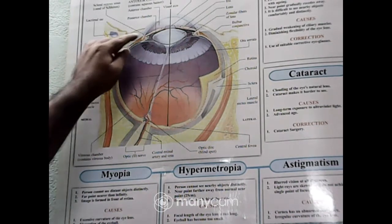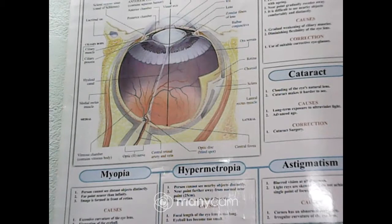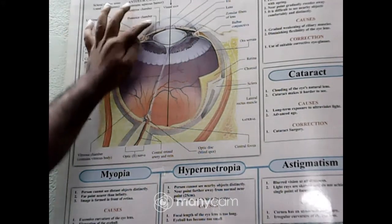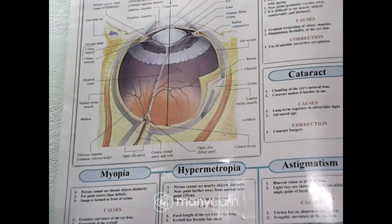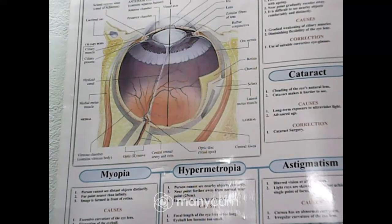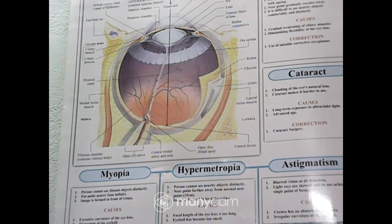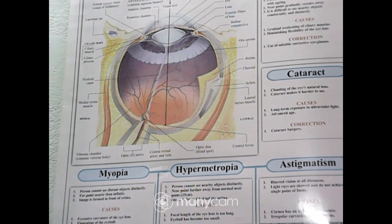Between the cornea and the eye lens, a fluid is present called aqueous humor. Between the lens and the retina, there is a liquid whose name is vitreous humor. These are the parts in your syllabus that I have discussed here.